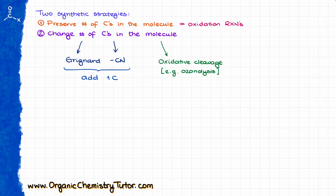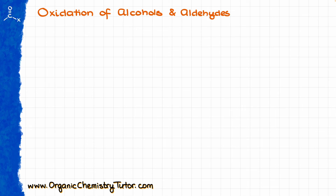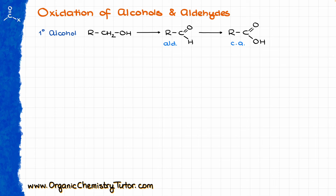Let's look at these reactions one by one, starting with the oxidation of alcohols and aldehydes. Just like I explained in my oxidation of alcohols video, if we are going to start with a primary alcohol, we can potentially oxidize it all the way to a carboxylic acid. However, we have to remember that in the process of this oxidation, the aldehyde is always going to be an intermediate. So if you have an aldehyde as a starting material, the aldehyde can be just as well oxidized to a carboxylic acid.